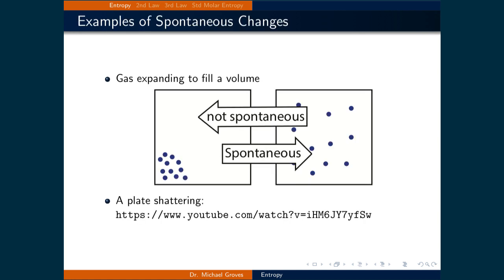We also intuitively know what it means for a process to be spontaneous. One example is a gas expanding to fill a volume. What is not spontaneous is all the gas particles moving to one corner of the box. Another example is that of a plate shattering, which can be seen by following the link in the slide. It is not spontaneous for all the pieces of the plate to come back together and form the plate.